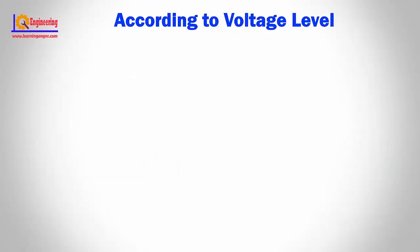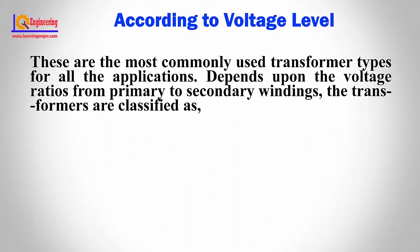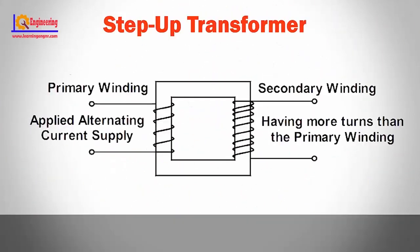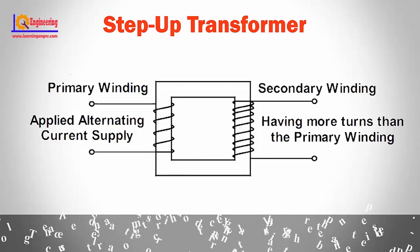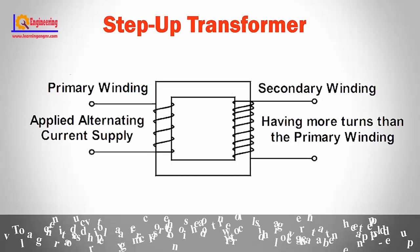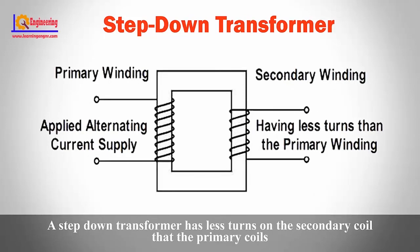According to voltage level, these are the most commonly used transformer types for all applications. Depending upon the voltage ratios from primary to secondary windings, transformers are classified as step-up and step-down. In a step-up transformer, there are more turns on the secondary coil than the primary coil, so the induced voltage across the secondary coil is greater than the applied voltage across the primary coil — in other words, the voltage has been stepped up.